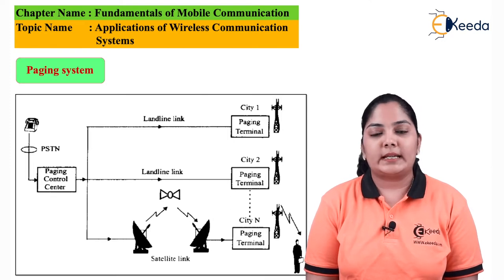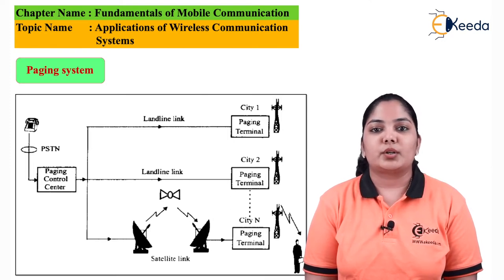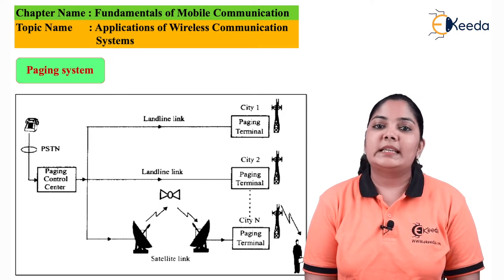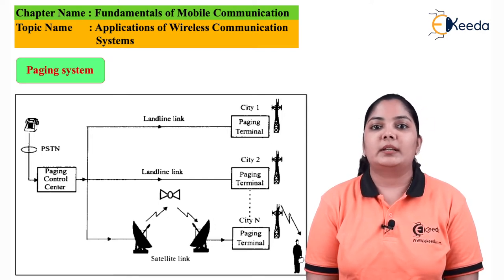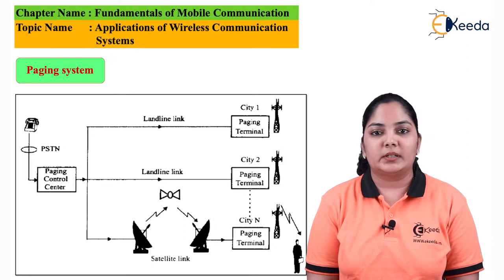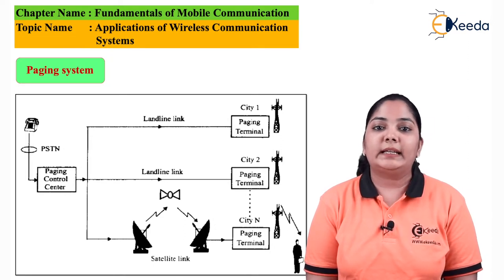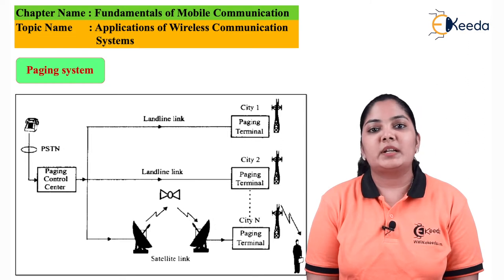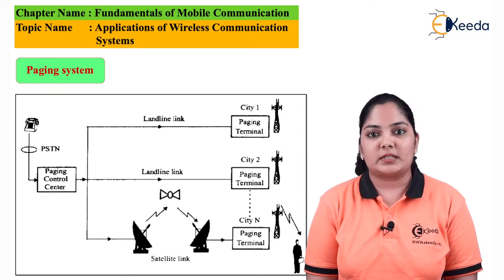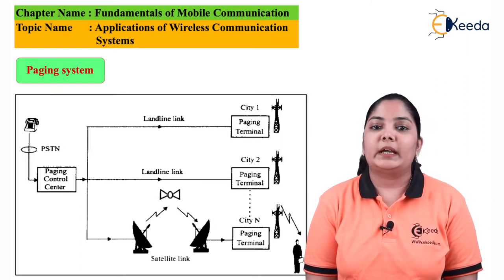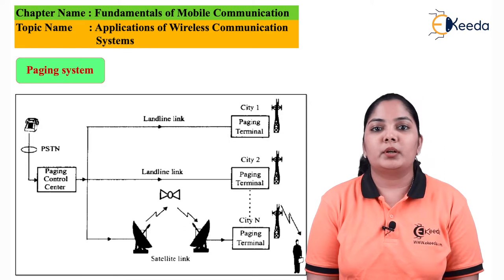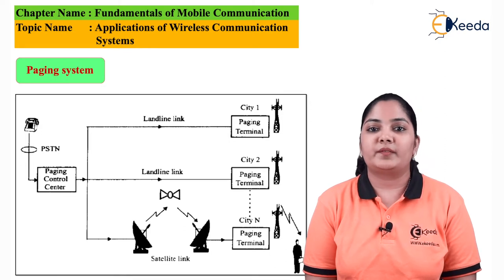From there, the paging control center forwards the message to the various paging terminals. These terminals have base stations like transmitters which broadcast the message in the entire region. This region depends on the types of paging systems. The area may vary from 2 kilometers to 5 kilometers.